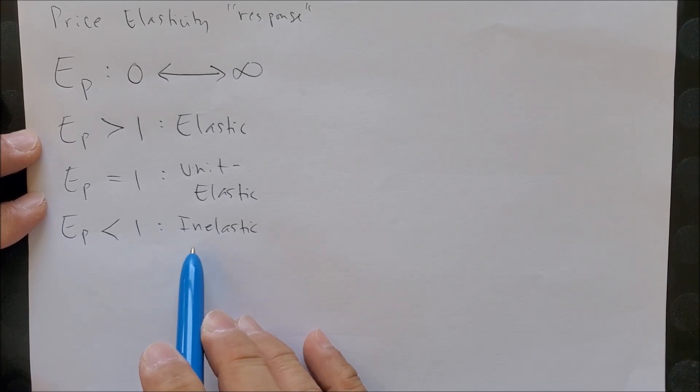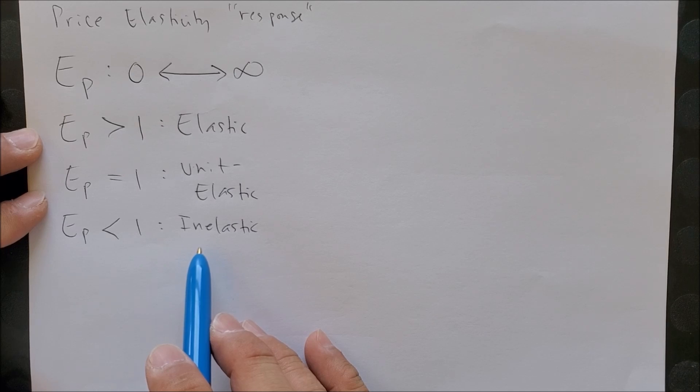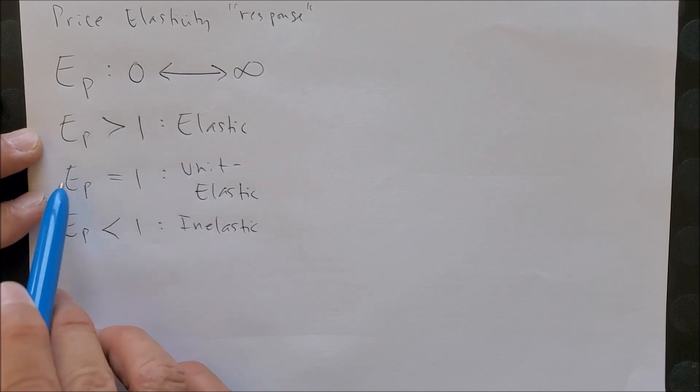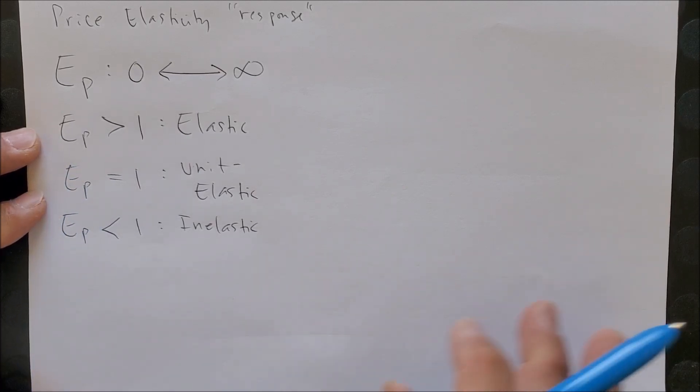Lastly, when we have a number that is less than one, we can call this inelastic, which means your response is slow. As the price of a good increases, you should consume less, but you're consuming less at a slower rate. Make sure to keep in mind what each of these three represents.